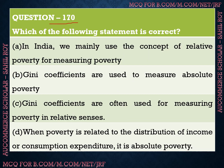Question number 170: Which of the following statements is correct? Option A: In India we mainly use the concept of relative poverty for measuring poverty. Option B: Gini coefficients are used to measure absolute poverty. Option C: Gini coefficients are often used for measuring poverty in relative senses. Option D: When poverty is related to distribution of income or consumption expenditure, it is absolute poverty. The correct answer is Option C — Gini coefficients are often used for measuring poverty in relative senses.